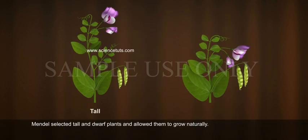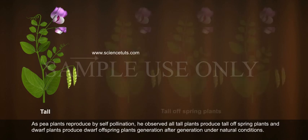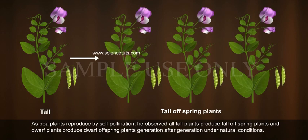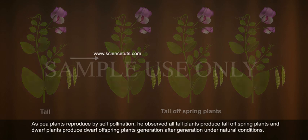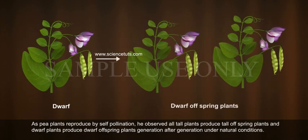Mendel selected tall and dwarf plants and allowed them to grow naturally. As pea plants reproduce by self-pollination, he observed that all tall plants produce tall offspring and dwarf plants produce dwarf offspring, generation after generation under natural conditions.